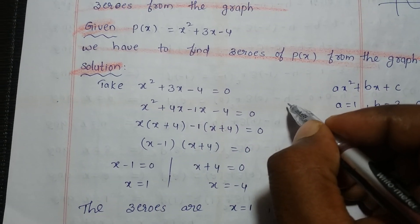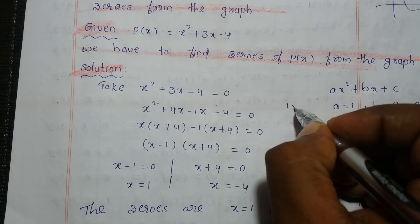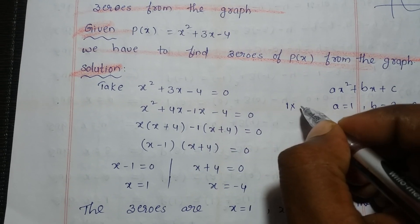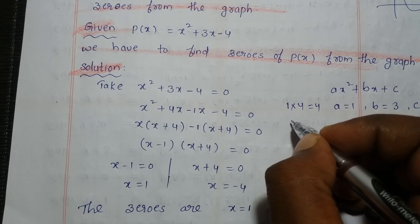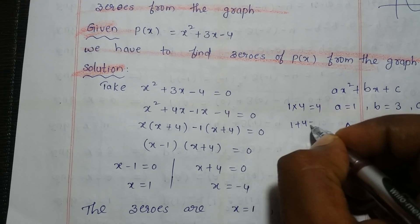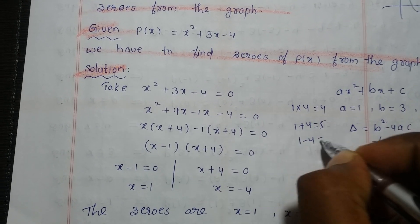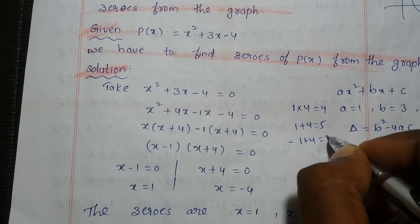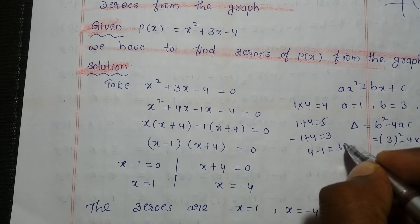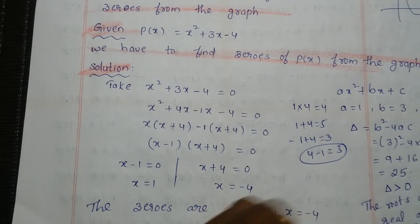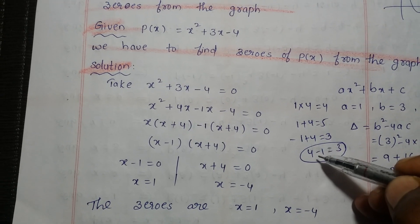Here, the coefficient of x square multiplied by the constant term: 1 into 4 is 4. The addition of two factors will give 5, and the difference of these two will give 3.